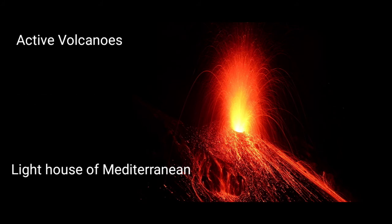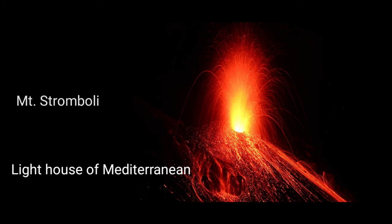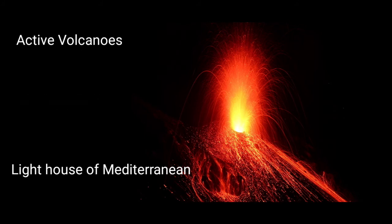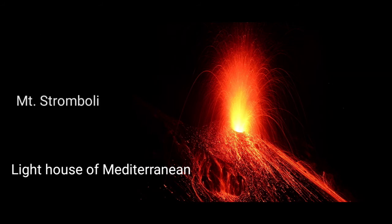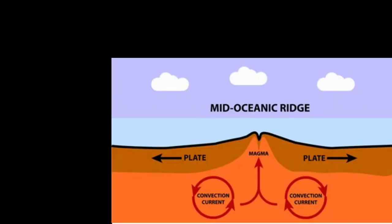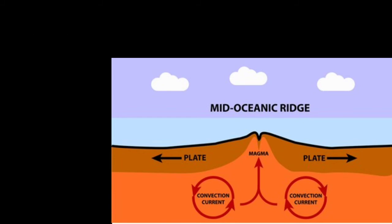It is important to note that Mount Stromboli is also known as the Lighthouse of the Mediterranean. The reason is that continuous emission of burning and luminous gases comes out from this volcano. Most active volcanoes are found along the mid-oceanic ridge, as this is a continental margin zone where a high number of volcanic activities occur.